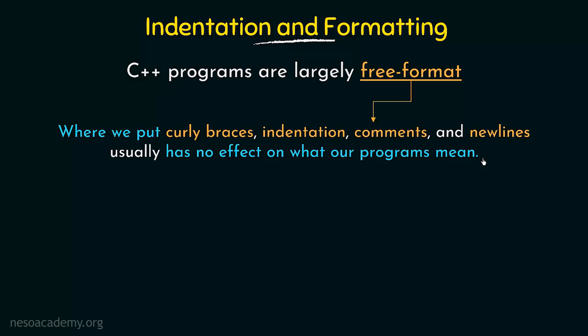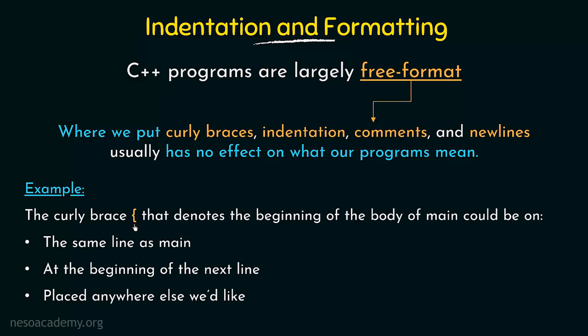The program is still going to get compiled and run correctly. For example, the curly brace — we know there is an opening curly brace at the beginning of the body of main. After writing the main function — the return type, name, and parameter list enclosed within parenthesis — we start our main block using an opening curly brace. This could be placed on the same line as main, at the beginning of the next line, or anywhere else you like. It does not matter where you place this opening curly brace. This is an example showing that C++ programs are free format.